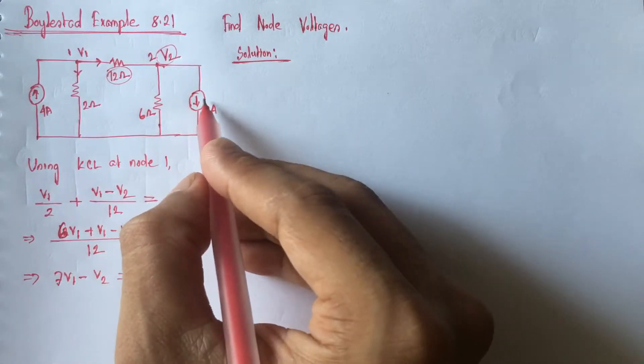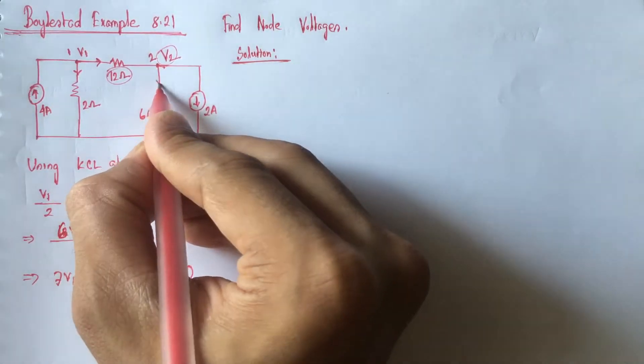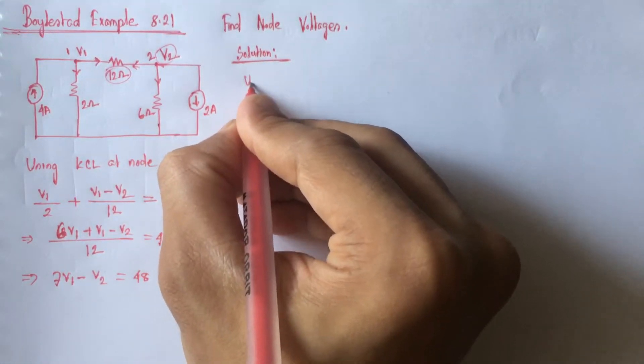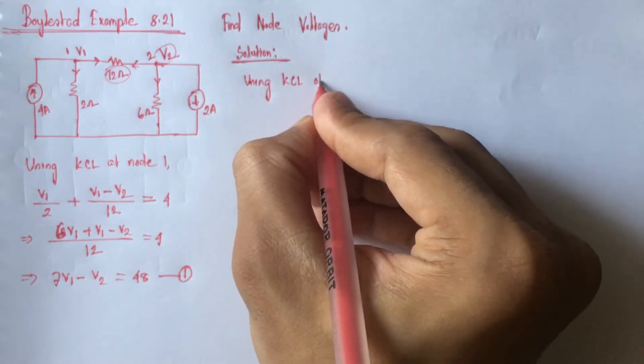Now, from node 2, we see that 2 ampere current is flowing out from node 2. If we let this current is flowing out and this current is also flowing out, then using Kirchhoff at node 2,